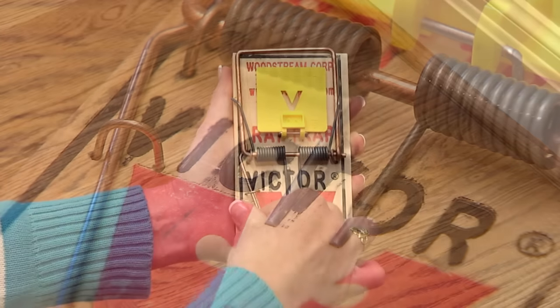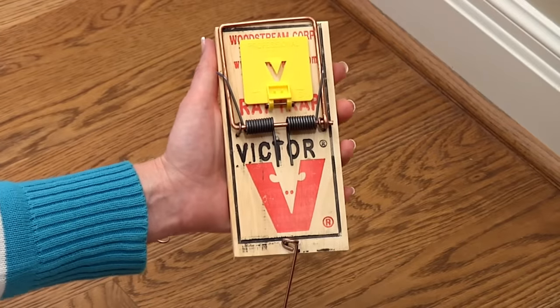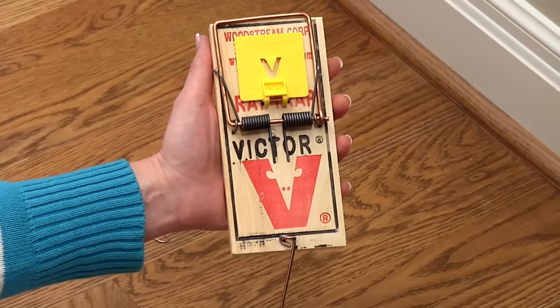Release the arm bar from the staple. Move the arm bar to the back of the trap so it hangs over the back of the trap.